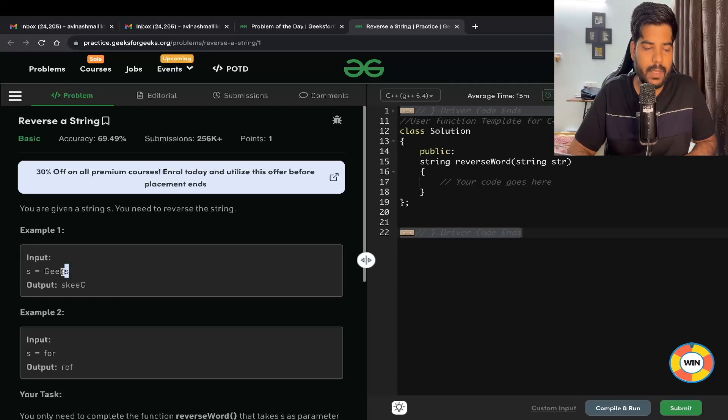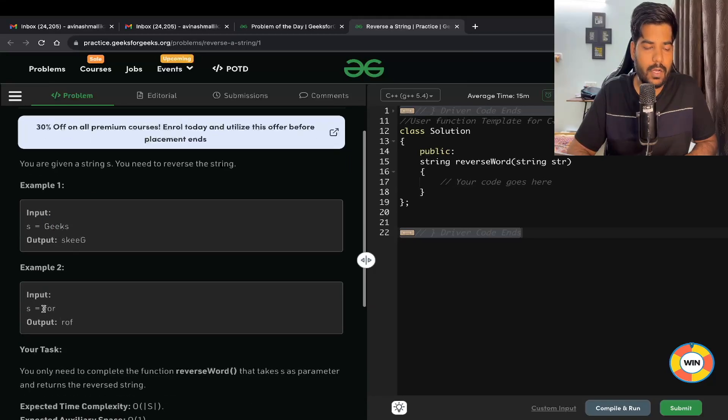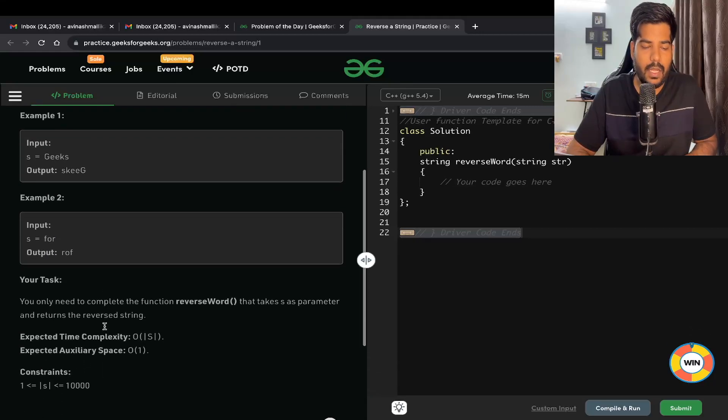For example, if s equals 'geeks', the reverse will be 'skeeg'. Similarly, for 'for', the reverse is 'rof'. The question is simple - let's discuss how we can solve this. There are many ways to solve this problem, and we will explore all the possible ways.